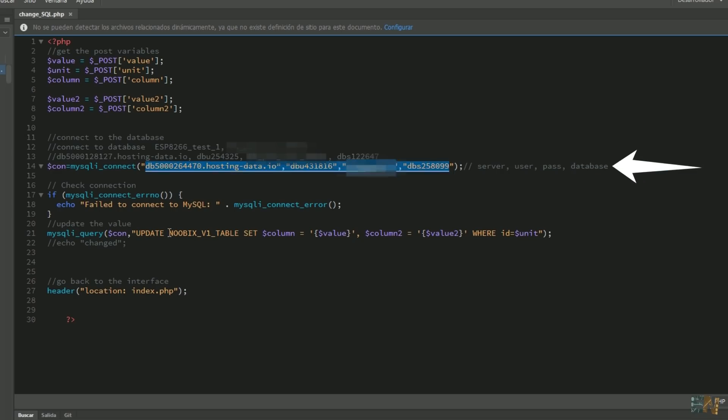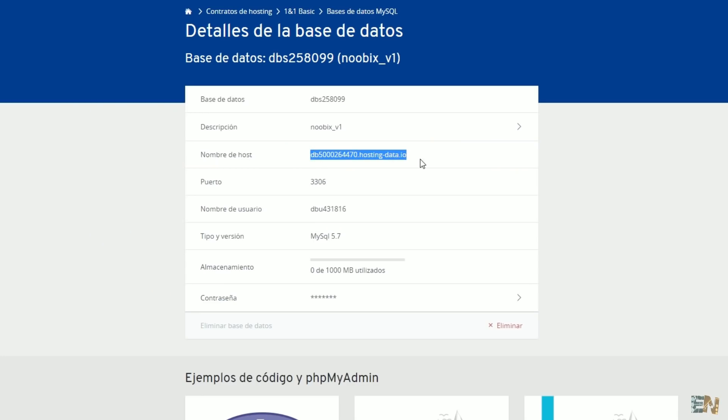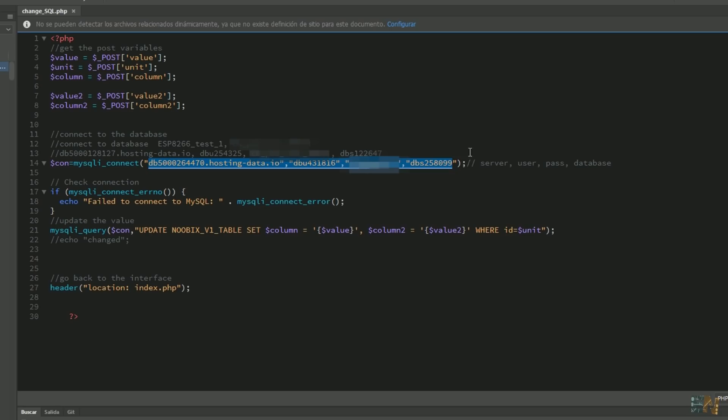Okay, so you have to change these values and this value. Get the server, the user, the password, and the database from your own database. I copy those values from here and paste those in the change SQL file. Then change the name of the table. In my case, the table I've created was named Noobix V1 table. Okay, now save the file.